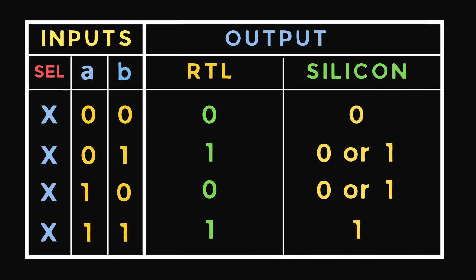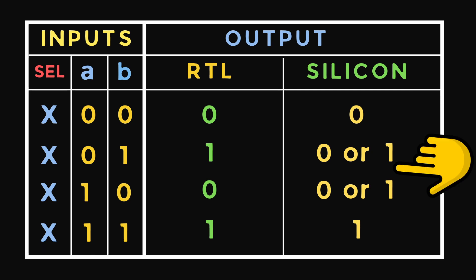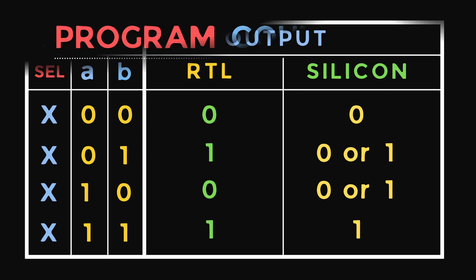Now let's compare the behavior of simulation and silicon. When select is X and both A and B are having same value, then simulation and silicon behaves in same way. But when the values are different, simulation propagates else statement value, that is B here, and silicon can have 0 or 1 value.